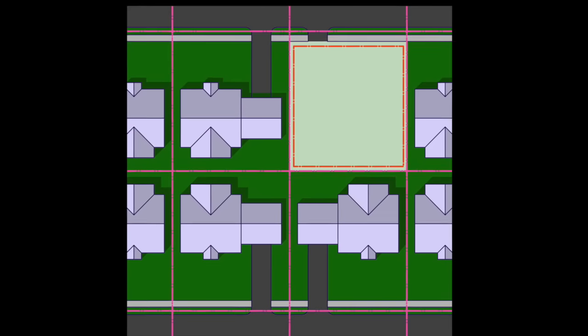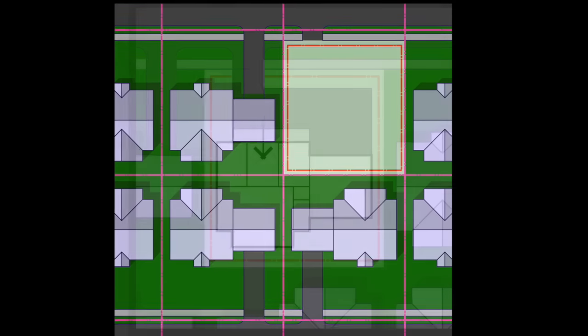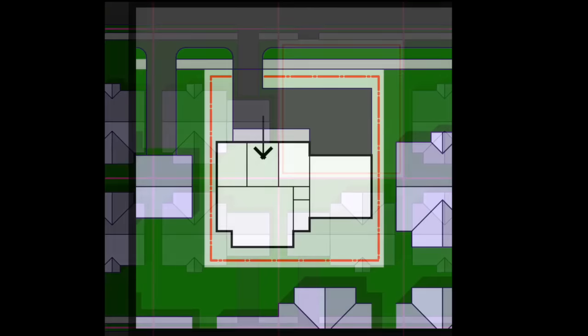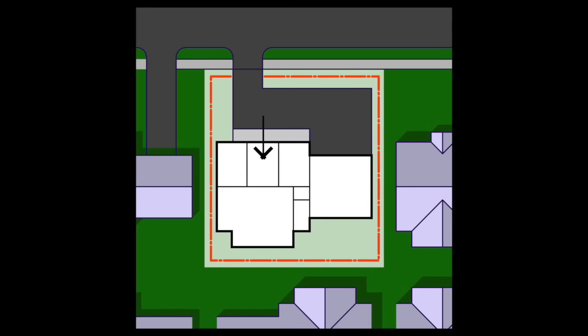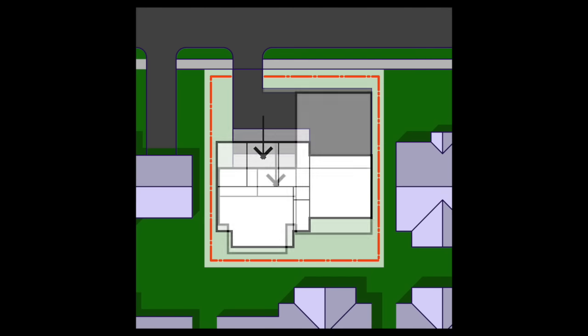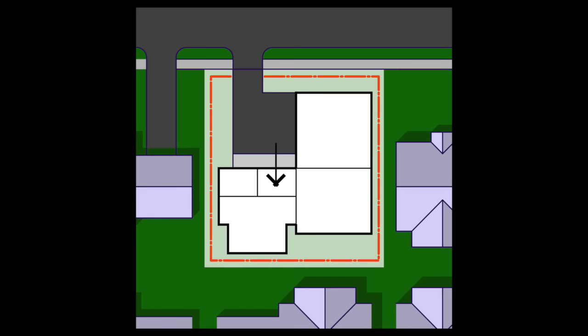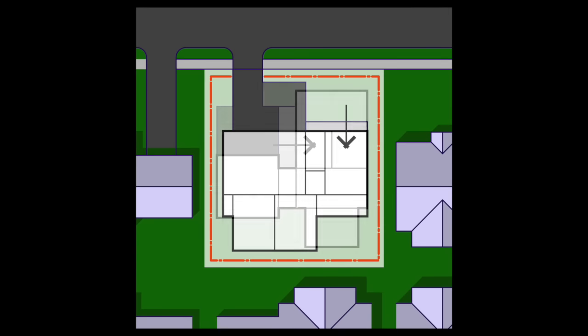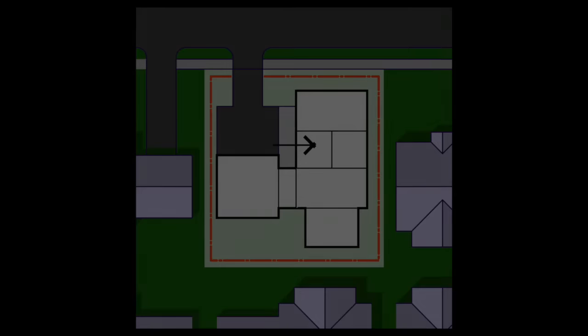The second phase of the architect's work with a client is schematic design. It's then that the architect develops architectural solutions to the client's requirements. This starts with organizing space on the site through diagrams in various iterations.